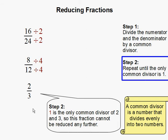And we're going to repeat step 2 until 1 is the only common divisor of 2 and 3. And since 1 is the only common divisor, this fraction cannot be reduced any further. So our lowest equivalent fraction with reducing is 2 over 3. And this completes our problem.